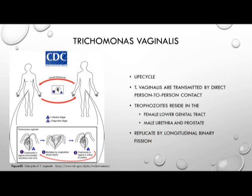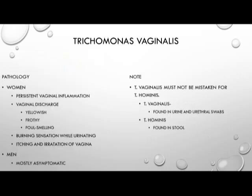The life cycle of Trichomonas vaginalis begins through sexual intercourse and person-to-person contact, with the organism passed through genital contact, replicating through longitudinal binary fission. Infection in women can be persistent and cause vaginal inflammation, vaginal discharge that can be yellowish, frothy, and foul-smelling — characteristic signs — as well as a burning sensation while urinating and itching and irritation of the vagina. In males, however, it is mostly asymptomatic and rarely seen in male urine samples.